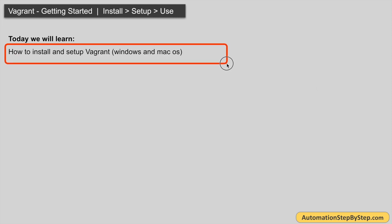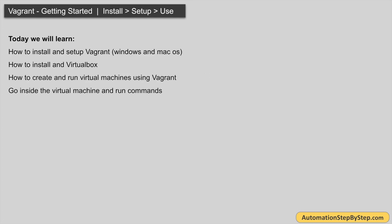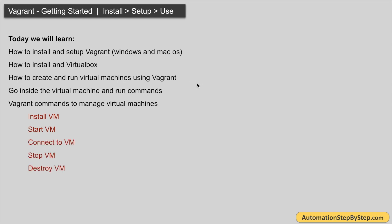In this session we are going to learn how to install and set up Vagrant, and I will tell you the steps on both Windows and Mac operating systems. Then we will see how to install VirtualBox. For Vagrant we need some provider for virtual machines — we can use VirtualBox which is free and open source and comes with direct support for Vagrant, but there are others as well. Then we will see how to create and run virtual machines using Vagrant, and we will also see some Vagrant commands to manage virtual machines: how to install, start, stop, connect to, and destroy them.